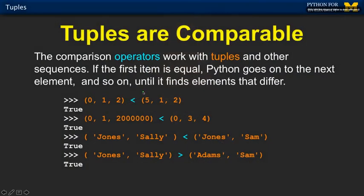Now, an interesting thing that tuples can do is we can compare them. Remember, we could compare strings. The way tuples work is it does the comparison starting at the leftmost one and compares it. So if it's asking the question — is this less than? Well, 0 is less than 5.